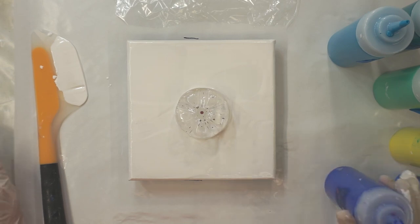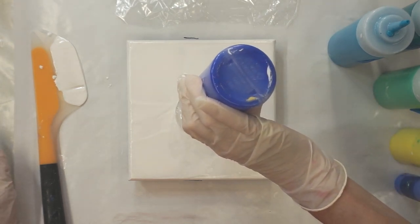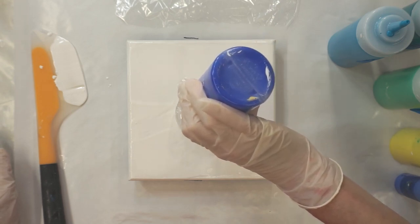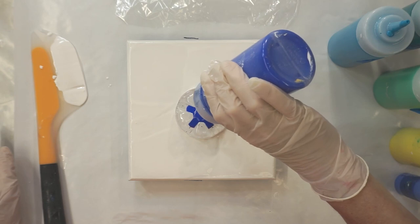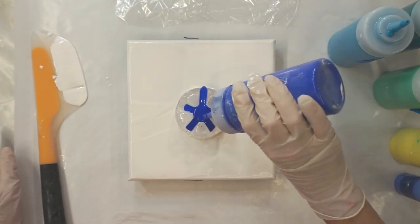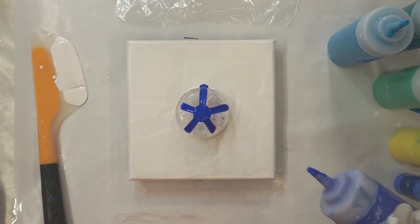With an ultramarine blue, just pour it down, let it go down the little sections. Don't want too much paint. Let it run down.